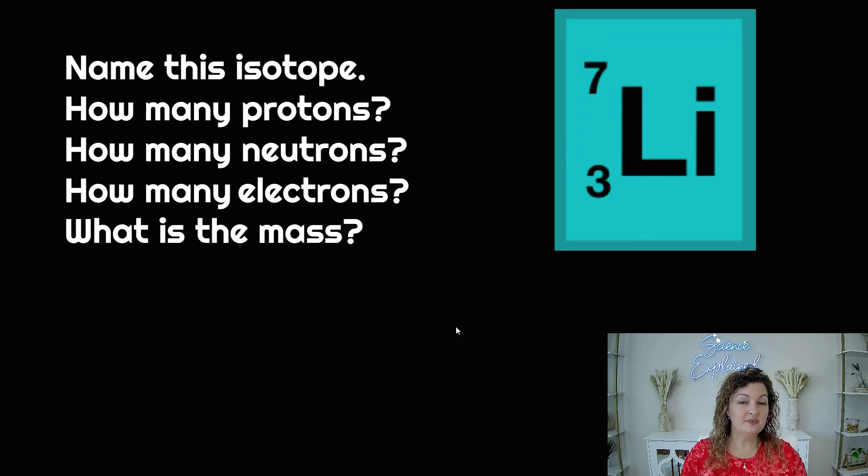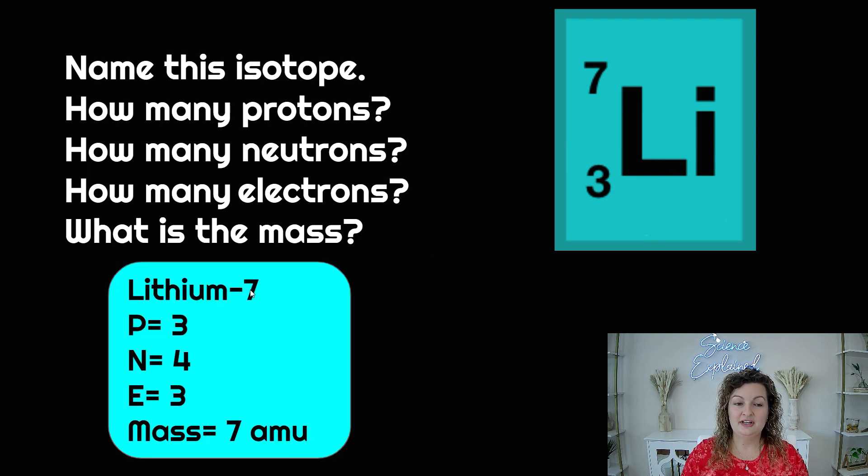Let's try another one. This one is almost identical. However, it is an isotope of the last one. So it's still lithium, but now we need to write dash seven. Pause the video if you want to try the rest of these. So lithium-7. How many protons? It's the same. Lithium will always have three protons no matter what, and that will never change.